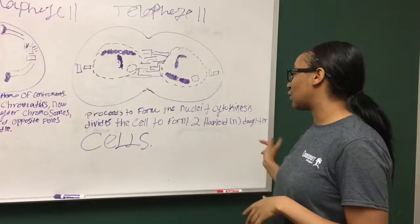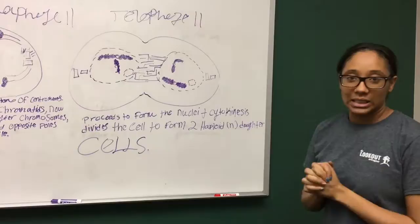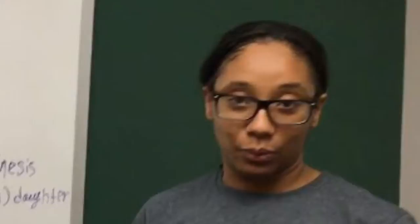Then telophase two, the proceeds to form the nuclei, and cytokinesis divides the cell to form two haploid daughter cells. They have completely decided that they are done with each other. They can no longer be in the same room, and they are deciding to split. Thank you.